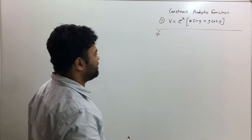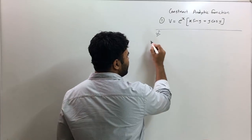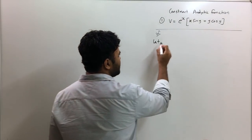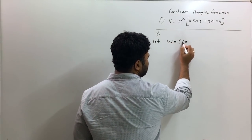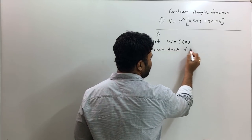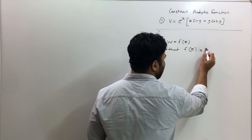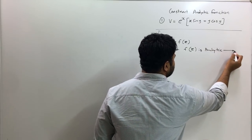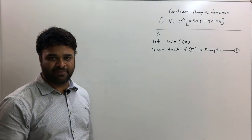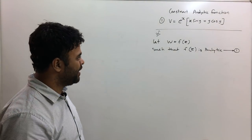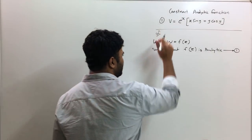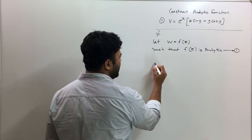Let's start solving. The first step is an assumption: let us assume that W is a function of Z, such that f(z) is analytic. That is my first statement — I am assuming that the function f(z) I'm going to get is an analytic function. Now let's see how it works.